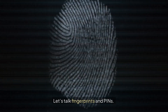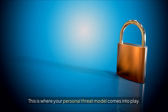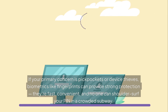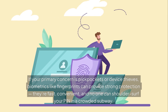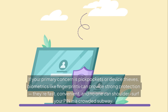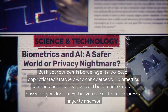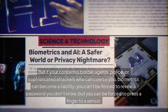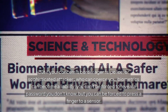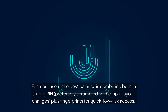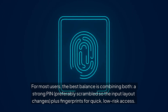Authentication: the biometrics debate. Let's talk fingerprints and PINs — this is where your personal threat model comes into play. If your primary concern is pickpockets or device thieves, biometrics like fingerprints can provide strong protection: they're fast, convenient, and no one can shoulder-surf your PIN in a crowded subway. But if your concern is border agents, police, or sophisticated attackers who can coerce you, biometrics can become a liability. You can't be forced to reveal a password you don't know, but you can be forced to press a finger to a sensor. For most users, the best balance is combining both: a strong PIN — preferably scrambled so the input layout changes — plus fingerprints for quick, low-risk access.